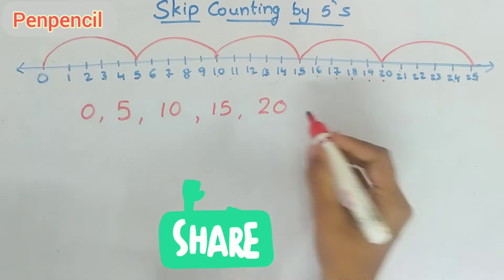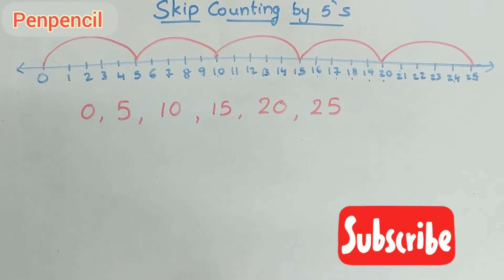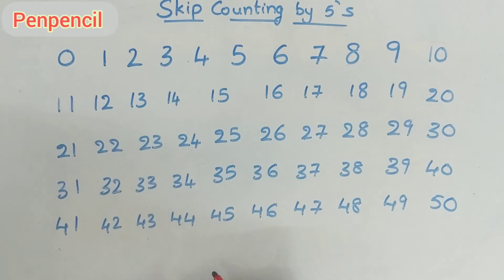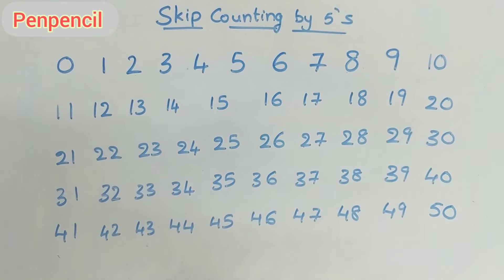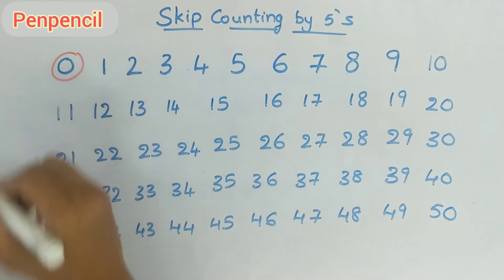Like this you have to learn skip counting by fives. Now we will do a few worksheets so that we can learn them easily. Kids, you have to circle the numbers when skip counting by fives. Come on, let us start — the first number is zero.